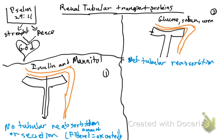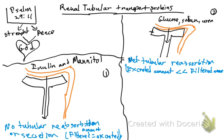The excreted amount is less than the filtered amount — you filter more than you excrete. In the graph, it enters, comes across, and some goes away, but you excrete less than you filter when you give the patient glucose, sodium, or urea.